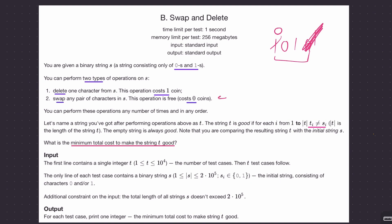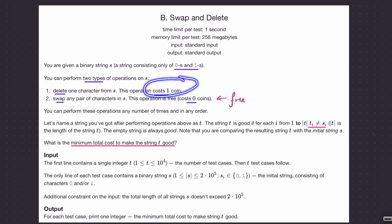The important thing is swapping is free — it doesn't cost you anything. You can move around the characters any way you want. Deleting a character costs one coin. What we want effectively is to get string t from s by either swapping or deleting characters, such that corresponding elements of t and s are not the same.